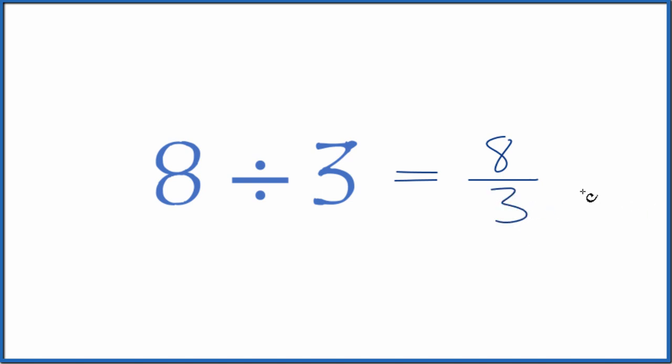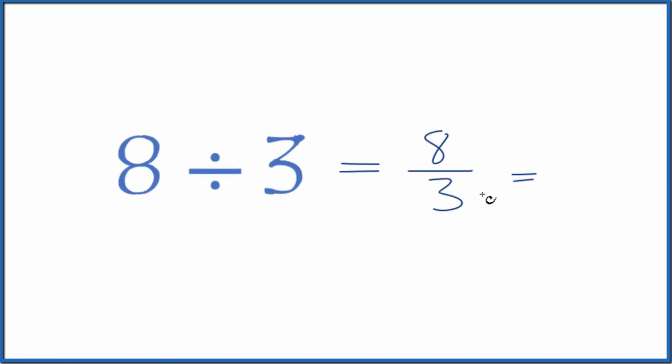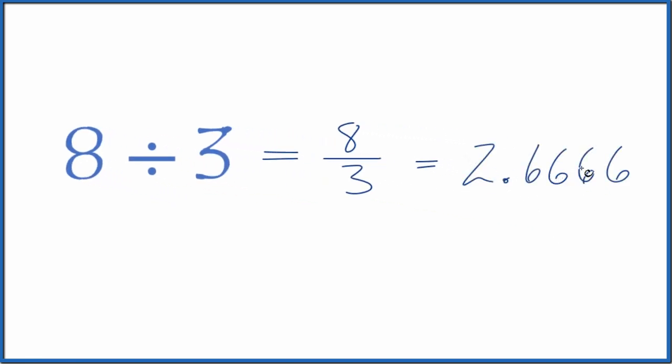We could also divide 8 by 3 on our calculator. 8 divided by 3 gives us 2.6666, and the sixes keep repeating.